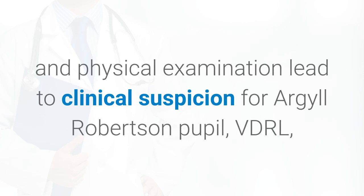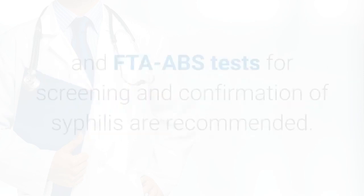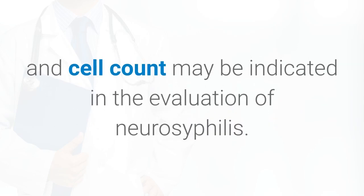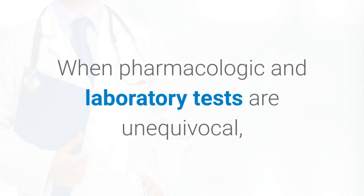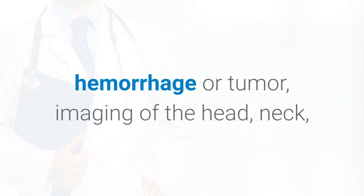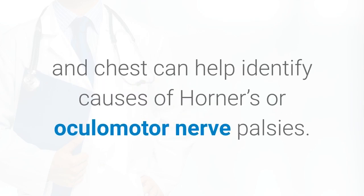If history and physical examination lead to clinical suspicion for Argyll Robertson pupil, VDRL and FTA-ABS tests for screening and confirmation of syphilis are recommended. Lumbar puncture for VDRL, FTA-ABS, total protein, and cell count may be indicated in the evaluation of neurosyphilis. When pharmacologic and laboratory tests are equivocal, or when clinical suspicion persists for an underlying aneurysm, hemorrhage, or tumor, imaging of the head, neck, and chest can help identify causes of Horner's or oculomotor nerve palsies.